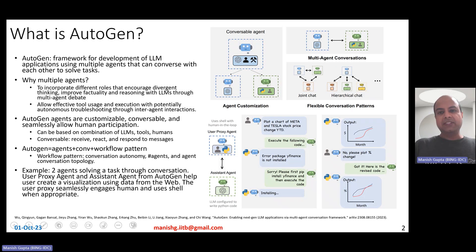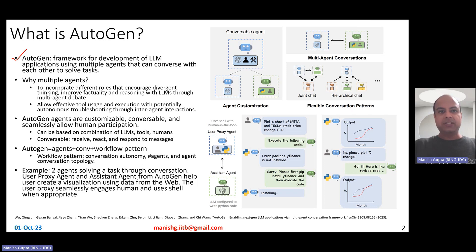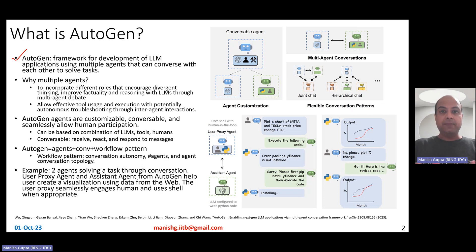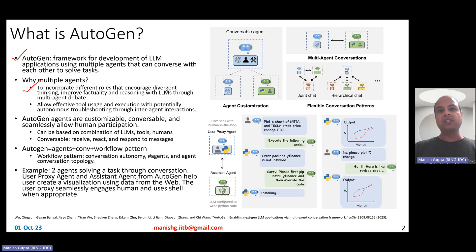What is Autogen? Autogen is a framework for development of large language model applications using multiple agents that can talk to each other to solve tasks. You might be thinking: why are multiple agents required? In general, it is observed that each agent can take up an individual role, and therefore multiple agents encourages divergent thinking, improving factuality and reasoning, reducing hallucination through multi-agent debate.